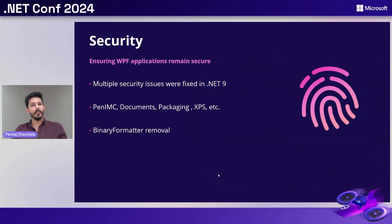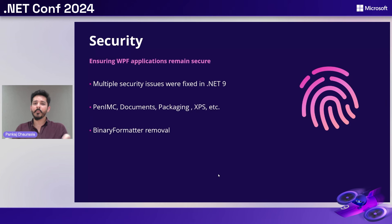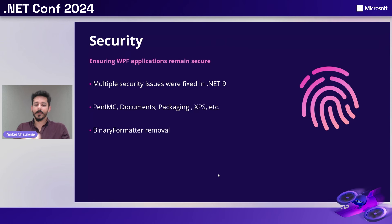Ensuring that WPF applications remain secure is our topmost priority. There have been multiple security fixes in .NET 9. PenIMC, documents, packaging, and XPS all had vulnerabilities reported and they were fixed with the newer versions of .NET. PenIMC is a crucial component in handling pen-related components. Document and packaging are the areas where WPF applications read documents and handle packaging and XPS-related functionality. The vulnerabilities that were fixed were allowing attackers to take unauthorized access to your application and escalation of privileges — with .NET 9, we were able to fix all of them.